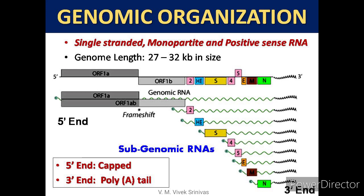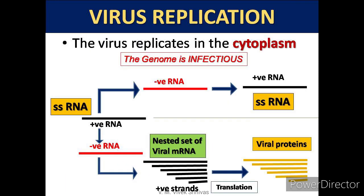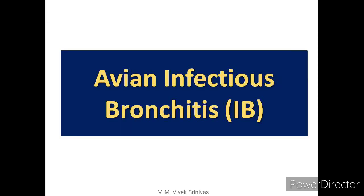This positive-sense RNA produces a nested set of subgenomic mRNAs during replication. Virus replication occurs in the cytoplasm and the genome is infectious. As discussed, the positive-sense RNA genome produces nested subgenomic mRNAs during replication, which are in turn translated to different viral proteins.